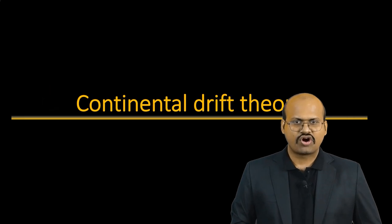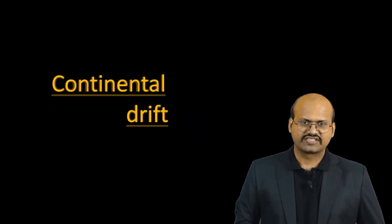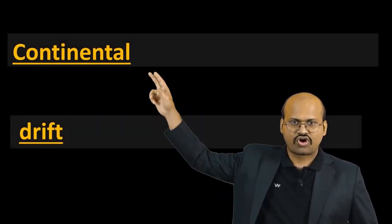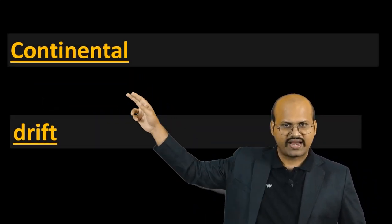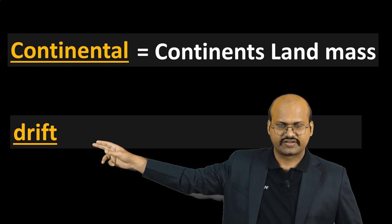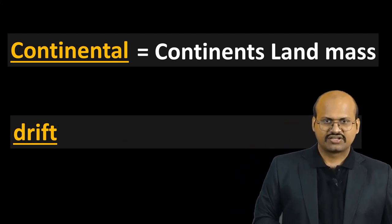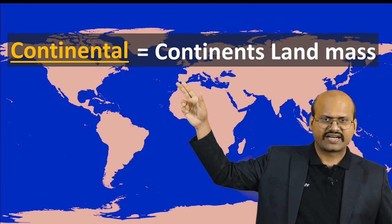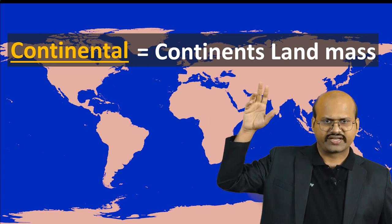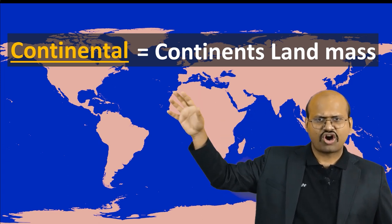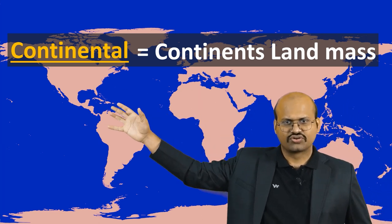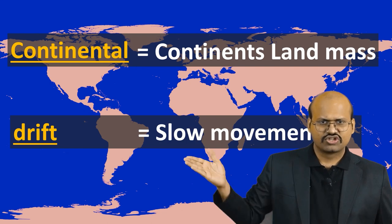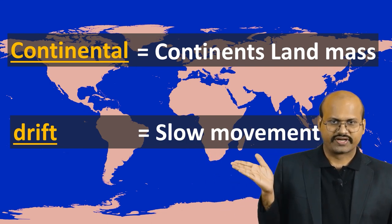The name Continental Drift consists of two words: Continental and Drift. Continental means continent landmasses, that is continents. It is all the region shown in pink colour in the figure, and Drift means slow movement.